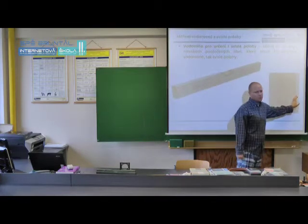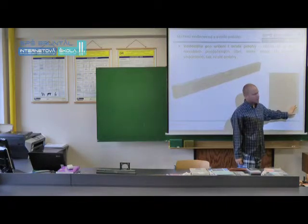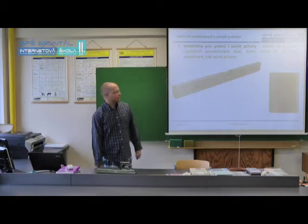It's rotated relative to the base libel. We place it on the wall we want to check for verticality. When the bubble is centered between the two marks, we can confirm that this position is vertical.